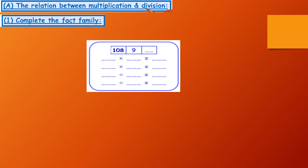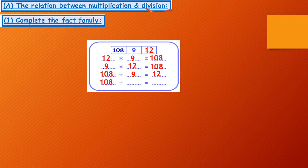108 and 9. So, 12 by 9 equals 108, 9 by 12 equals 108, 108 divide 9 equals 12, 108 divide 12 equals 9.